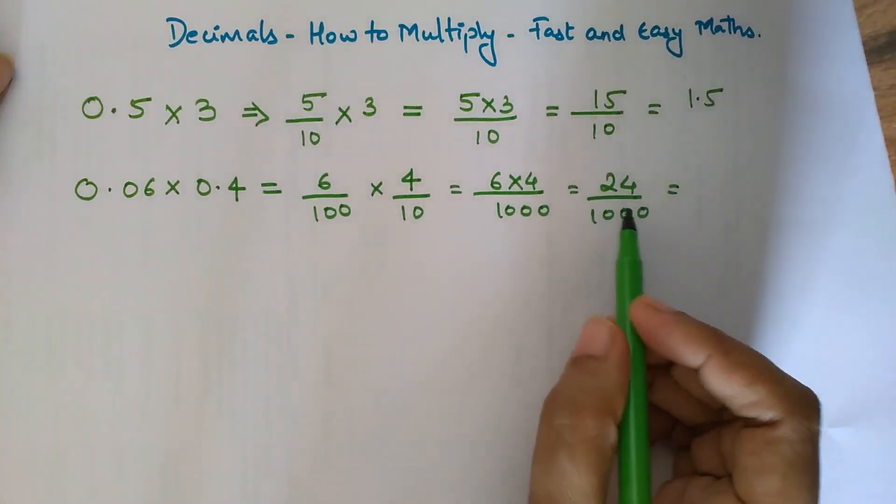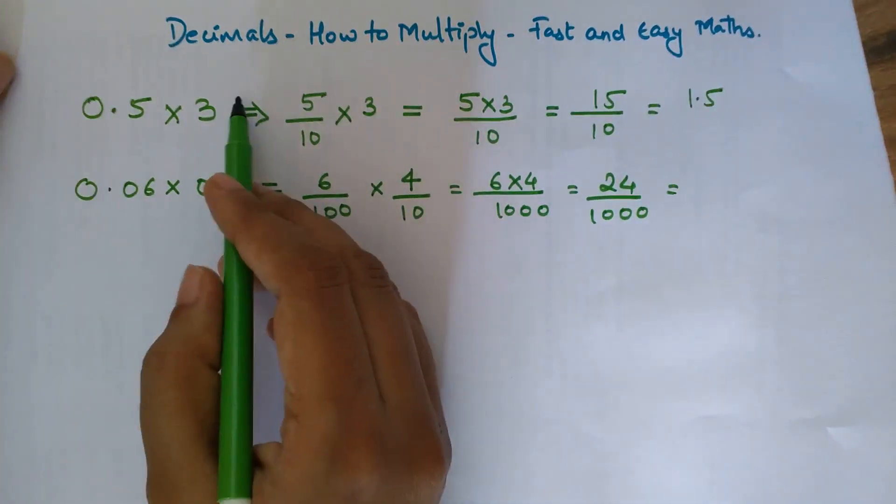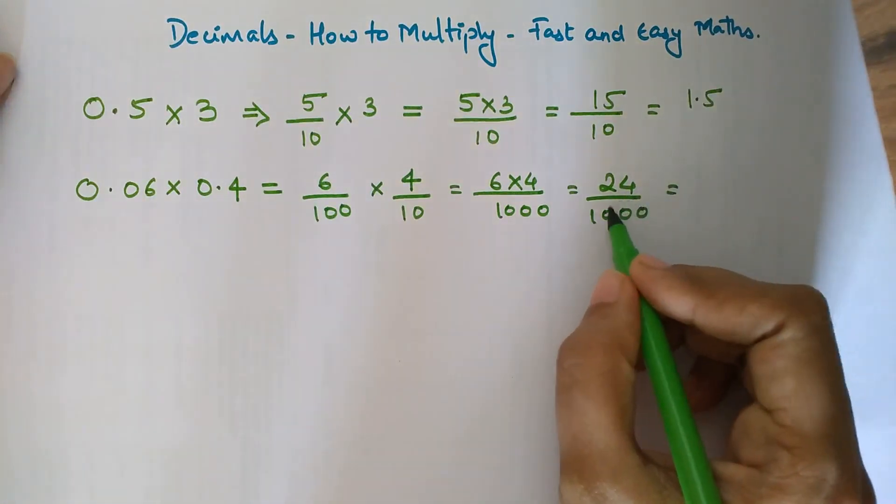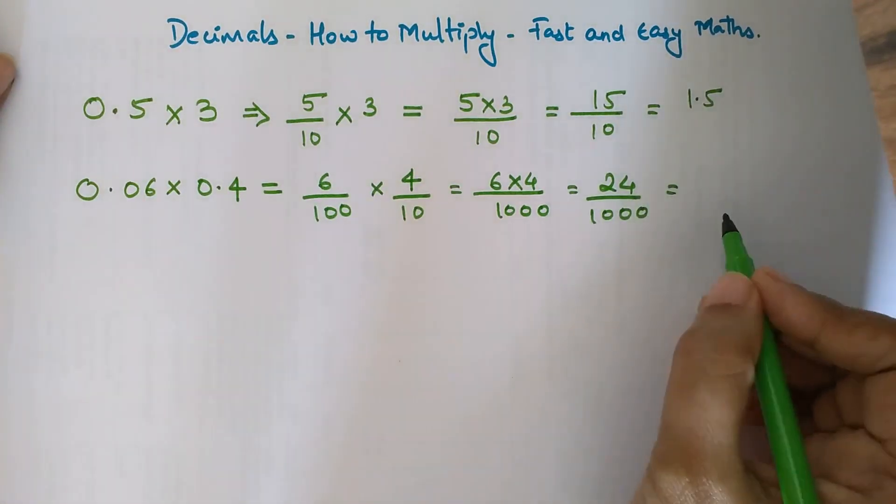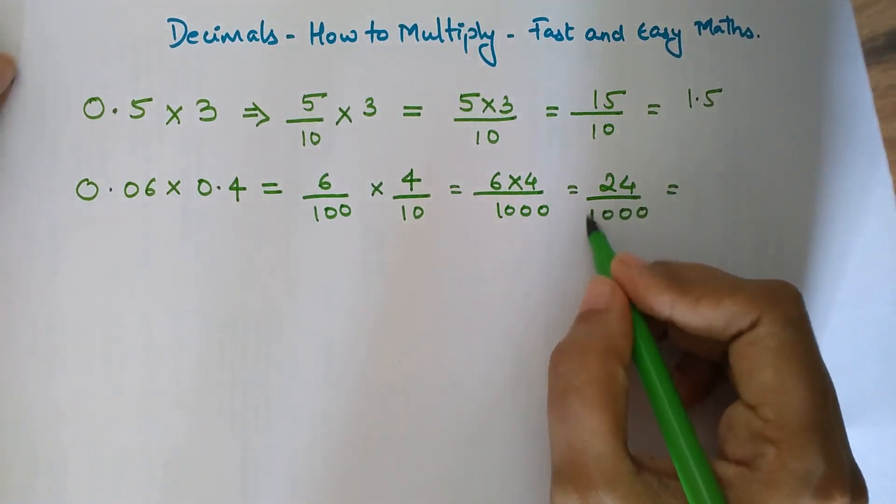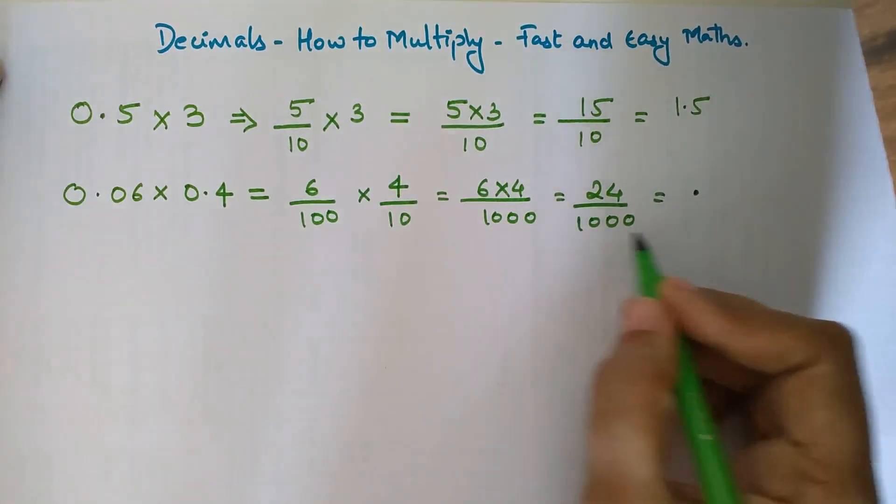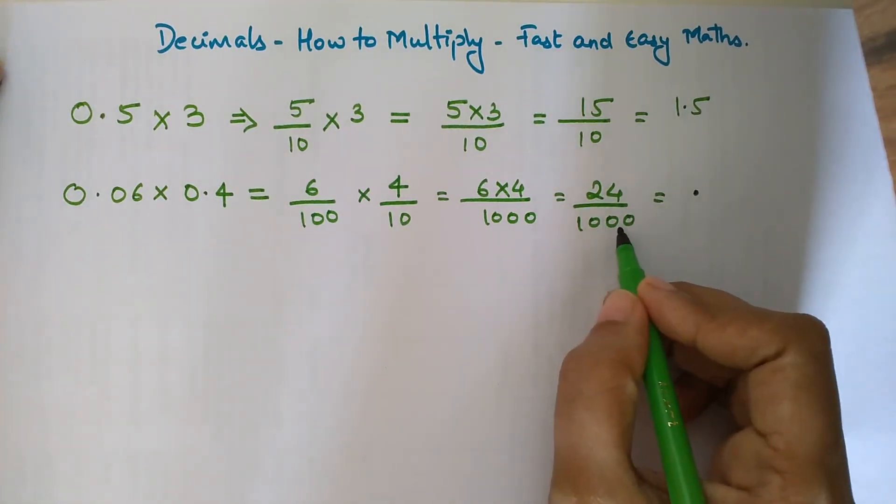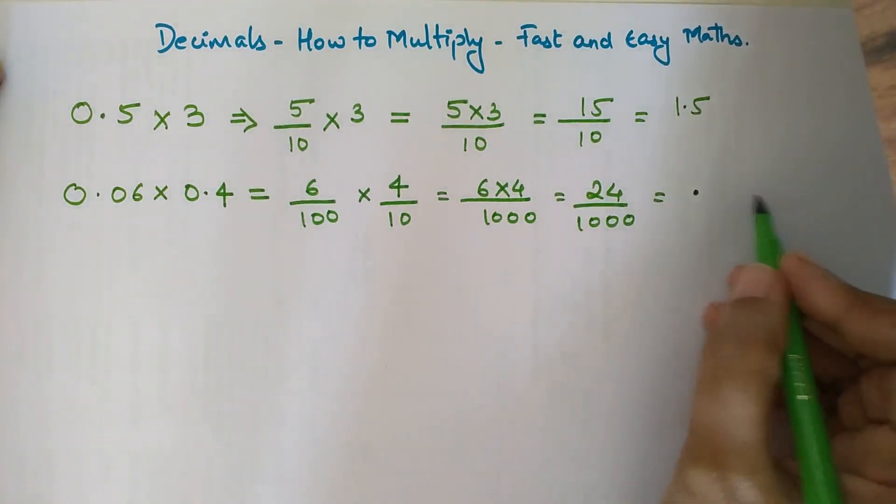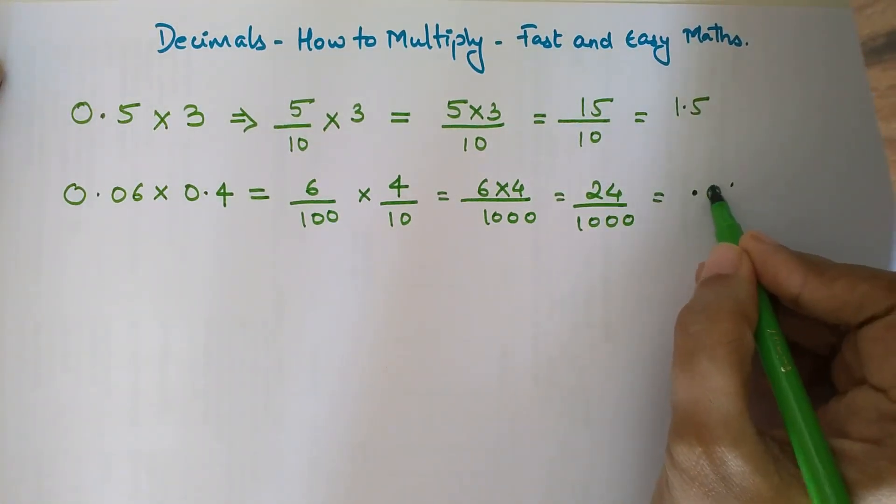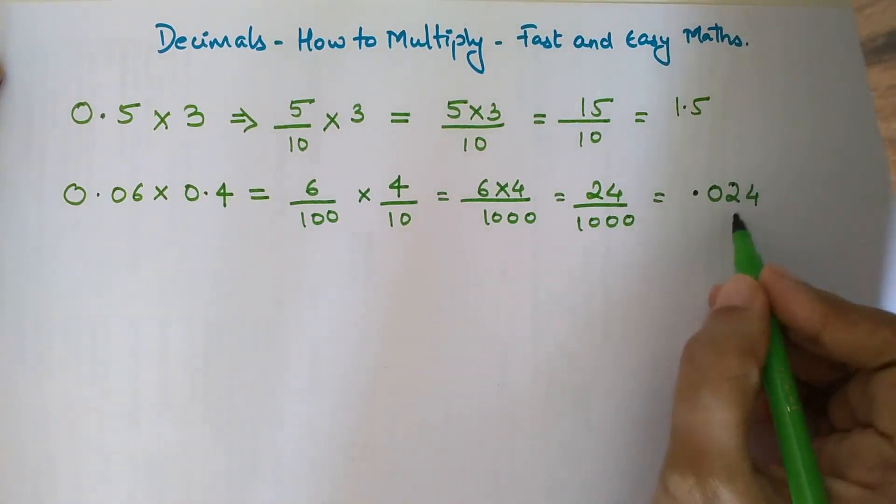When you have to convert a fraction into a decimal number, the zeros indicate the number of digits after the decimal point, and 1 indicates the decimal. So 1 is the decimal, and we have 3 zeros, meaning we should have 3 digits after the decimal point. We have 2 4, so this will be represented as 0.024.